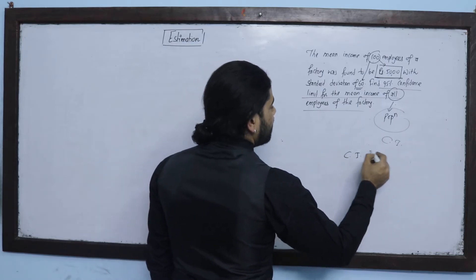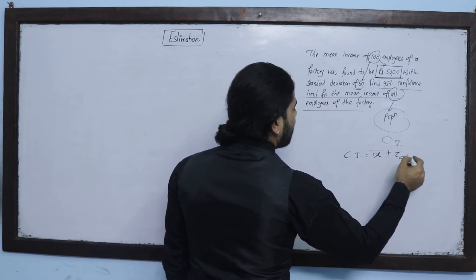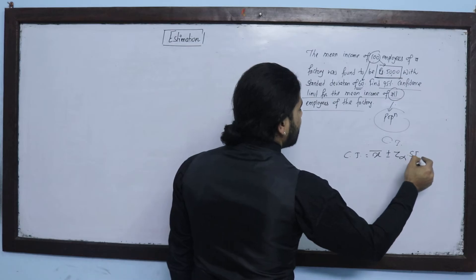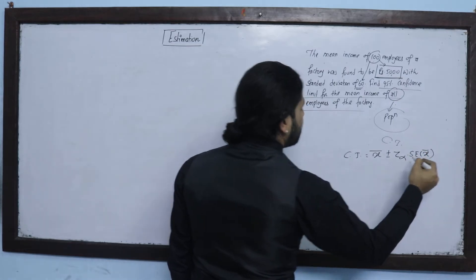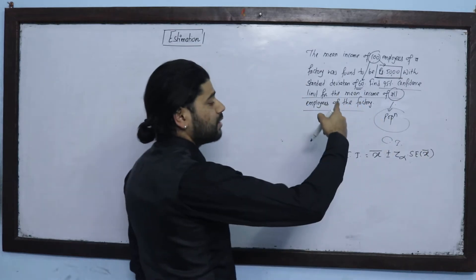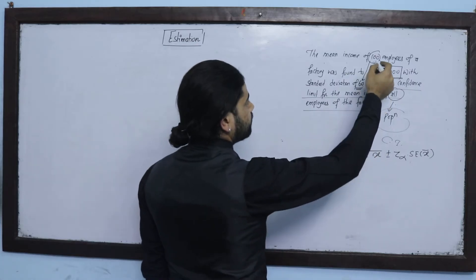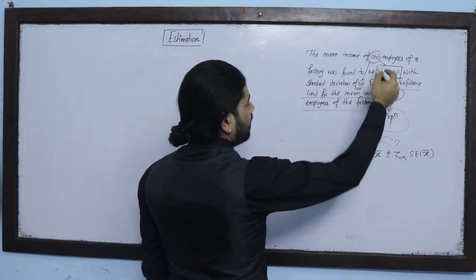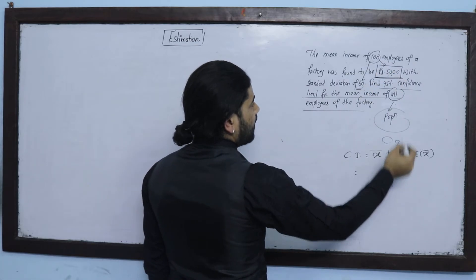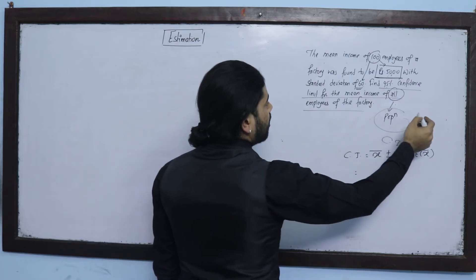The confidence interval is given by the sample mean plus minus Z_alpha into the standard error of the mean. We have X̄ provided as 5,000, and Z_alpha for 95% confidence.